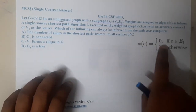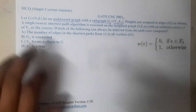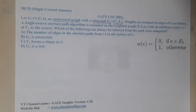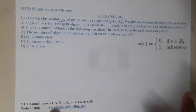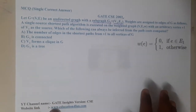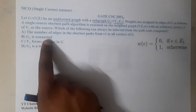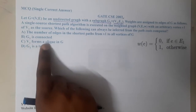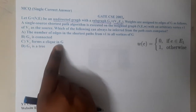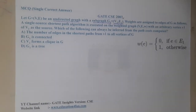Which of the following can always be inferred from the path cost computed? The weight is 0 if the edge belongs to E1, otherwise 1. Option A states the number of edges in the shortest path from v1 to all vertices. Option B says G1 is connected. Option C says v1 forms a clique in G. Option D says G1 is a tree.